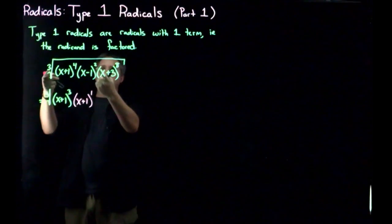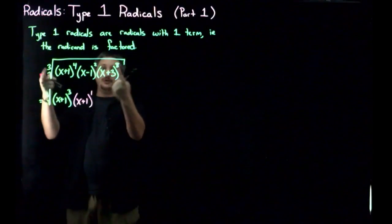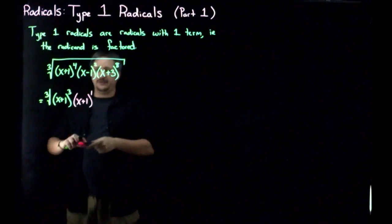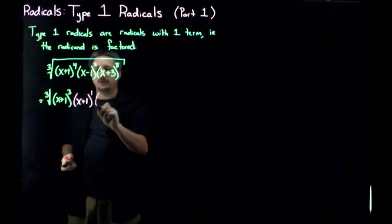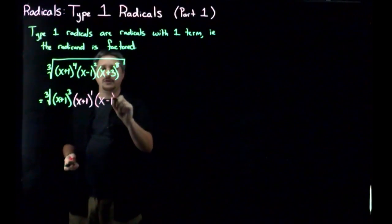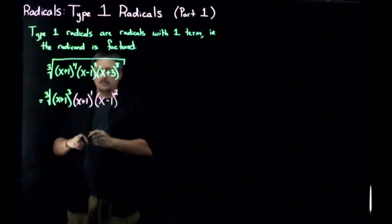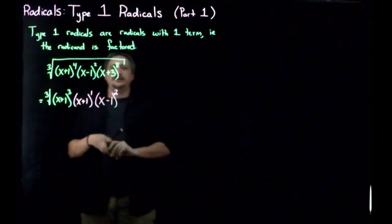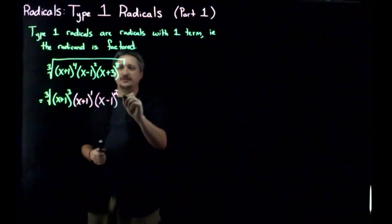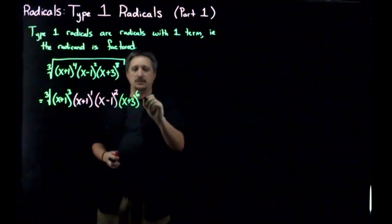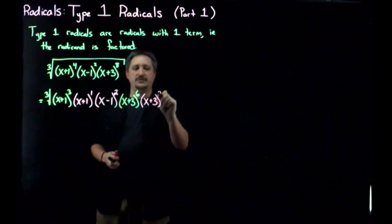The x minus 1, the highest multiple of 3 is 0, meaning I can't actually get any of these pulled out. So I have, in this case, just the remainder, x minus 1 squared. x plus 3 to the eighth, so the biggest multiple is 6, so I'm going to have x plus 3 to the sixth, which leaves me with the remainder, x plus 3 squared.